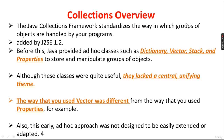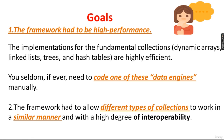Although those earlier classes were quite useful, they lacked a central unifying theme. The style to handle groups of objects was different for different classes — like Dictionary, Vector, Stack, and Properties. The way you used Vector was different from the way you used Properties, for example. This early ad hoc approach was not designed to be easily extended or adapted, making it difficult to understand, learn, and implement.